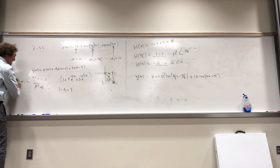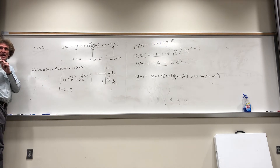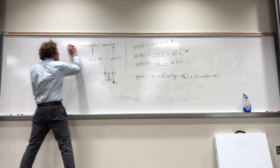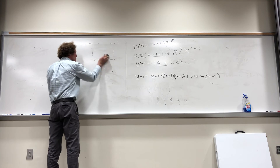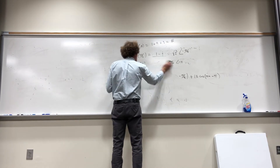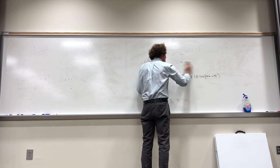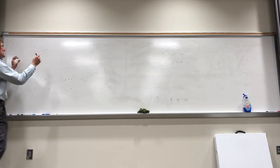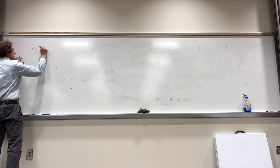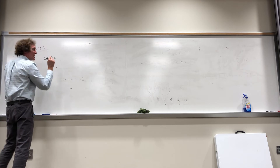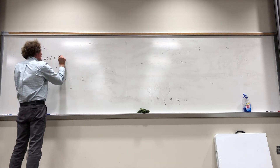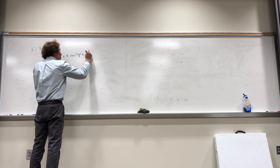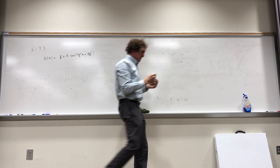Now the next problem — problem 733 — is the one that is listed as 731 in the solutions but is actually 733. In the book he does a lot of this stuff with Z-transforms, which we will get to, but I don't go to Z-transforms until I'm done with the discrete Fourier transform. Work with me on this one. x[n] = 3 + 4cos(π/2·n + π/4).